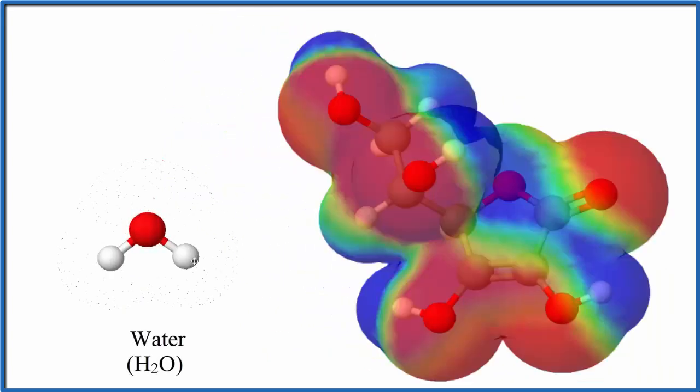We have positive and negative poles, and that means it's like water. Water has poles, so those poles can attract each other. Our vitamin C dissolves in water.